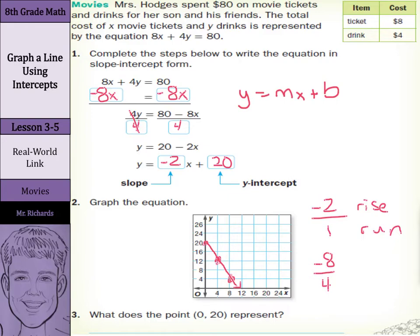Now, what does the point (0, 20) represent? Well, that's right here. So that's the y-intercept.